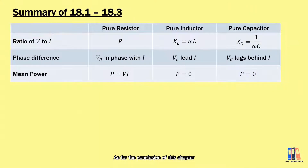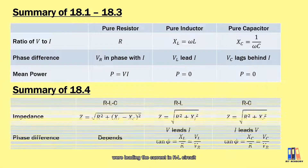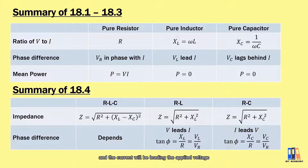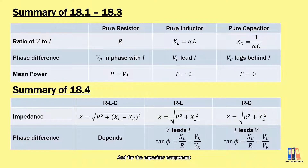As for the conclusion of this chapter, we have learned about the impedance for each of the three circuits, the phase difference, and how to draw the phasor diagram. In short, the applied voltage leads the current in the RL circuit, and the current leads the applied voltage in the RC circuit. This is similar to what happens in a pure inductor or pure capacitor circuit: for the inductor, voltage leads the current; for the capacitor, voltage lags behind the current.